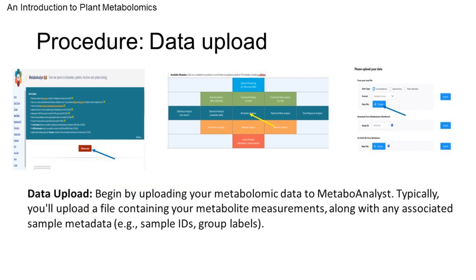From here, I will overview the procedure for developing a classification model. The first step in developing a biomarker model is to upload your metabolomic data to MetaboAnalyst. This includes a file containing your metabolite measurements as well as any associated sample metadata, such as sample IDs and group labels.